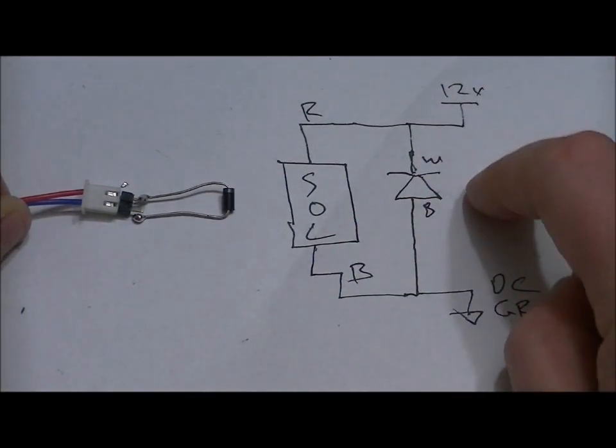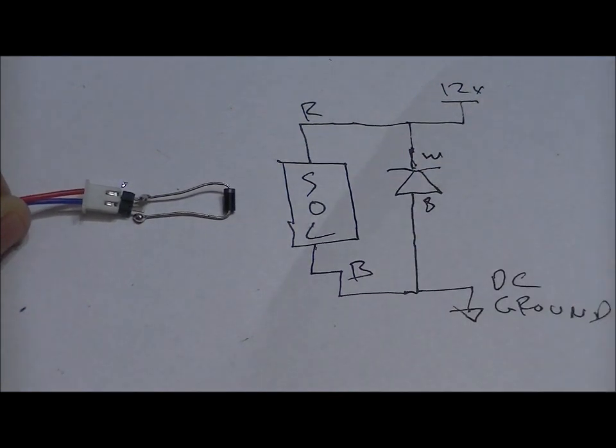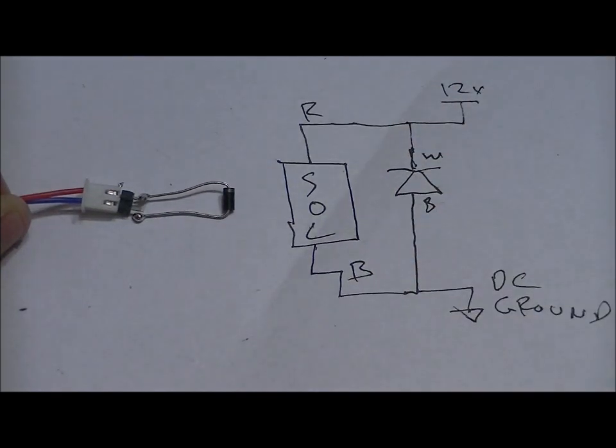If we reverse this, if we place the negative of the diode, the cathode to ground, and the anode to 12 volts, 12 volts is going to flow right through the diode to ground and blow up your diode.